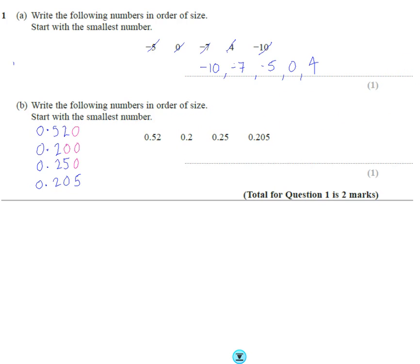So if we look down the list, if we look down this list, we've got 5, 2, 2. So this is clearly the biggest. Look at the next numbers. We've got 2, 0, 2, 5, 2, 0. So it's between this one and this one. So we've got 2, 0, 0 and 2, 0, 5. So clearly this is the smallest one.